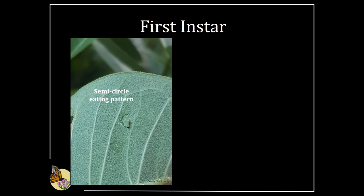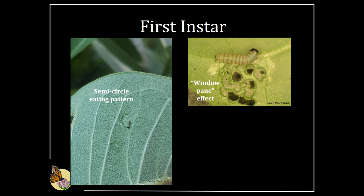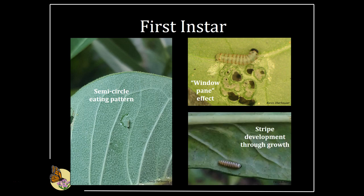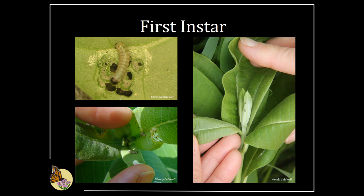Young monarch larvae also have a distinctive chewing pattern. At this stage, larvae eat in half-moon or semi-circle shapes to stop the flow of sticky latex to the area of the leaf they are eating. It's possible for a first instar to become stuck in the latex and die, so this strategy makes eating safer. The mandibles are small, so the first instar may only chew halfway through the leaf, leaving behind a semi-transparent window. Only mark larvae as present if you actually find the larvae — these clues may remain even after a larvae died or was eaten by a predator.